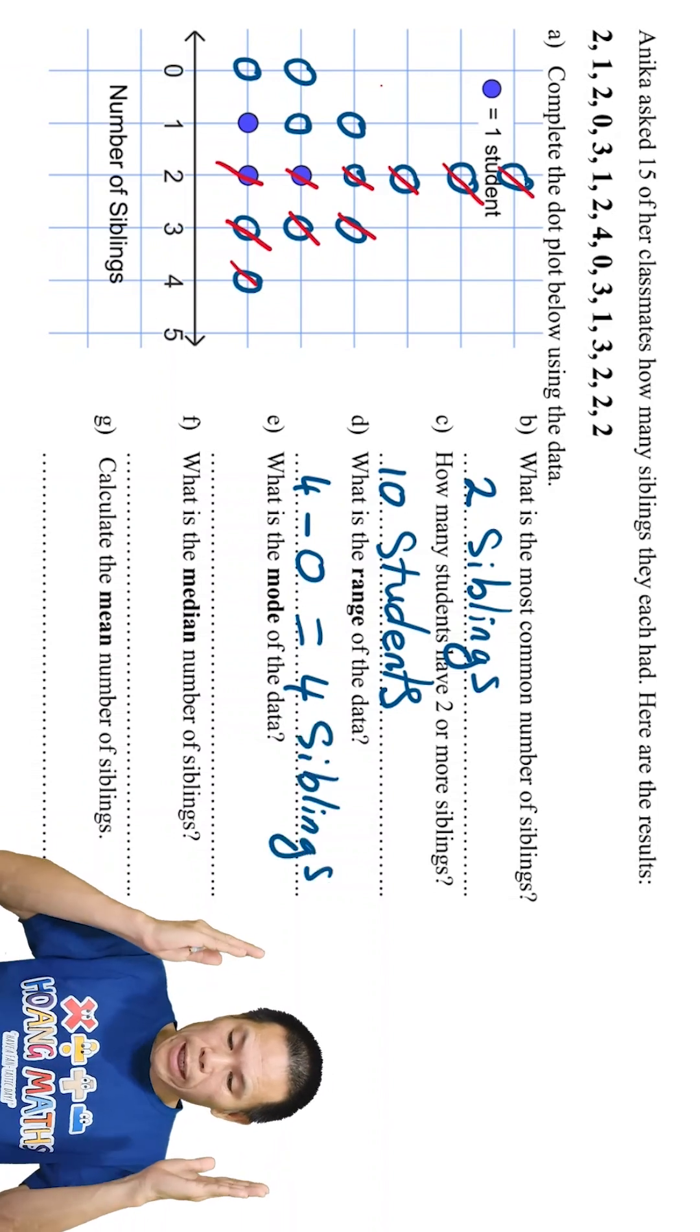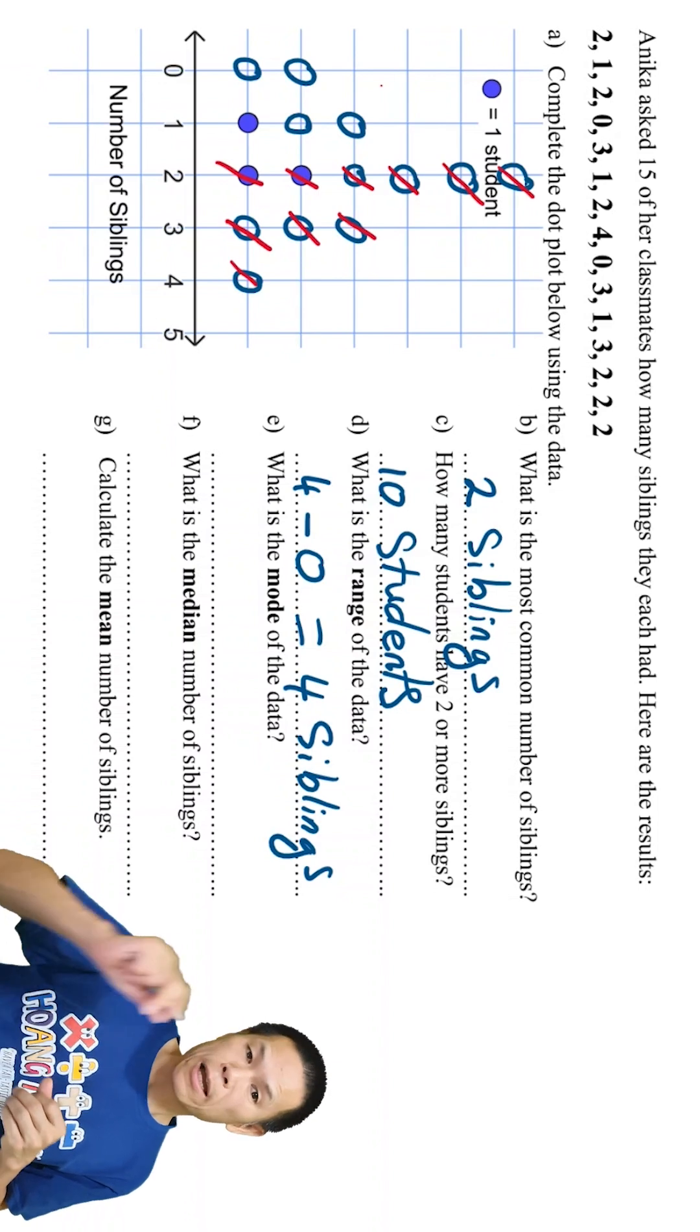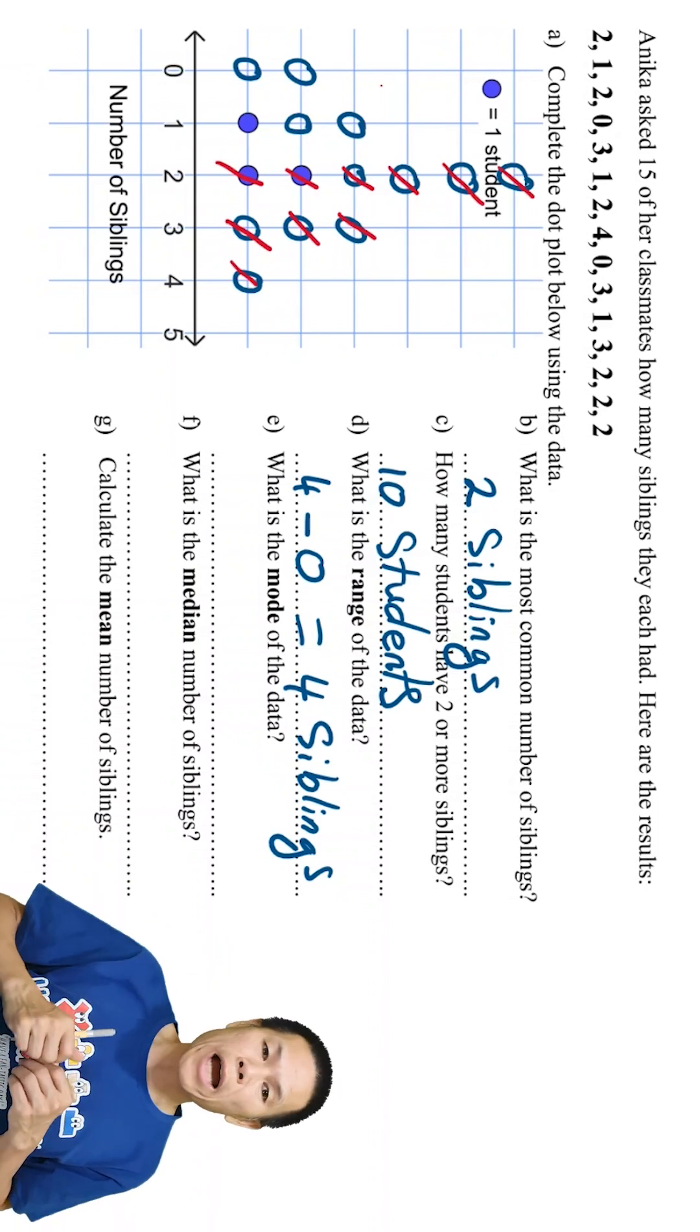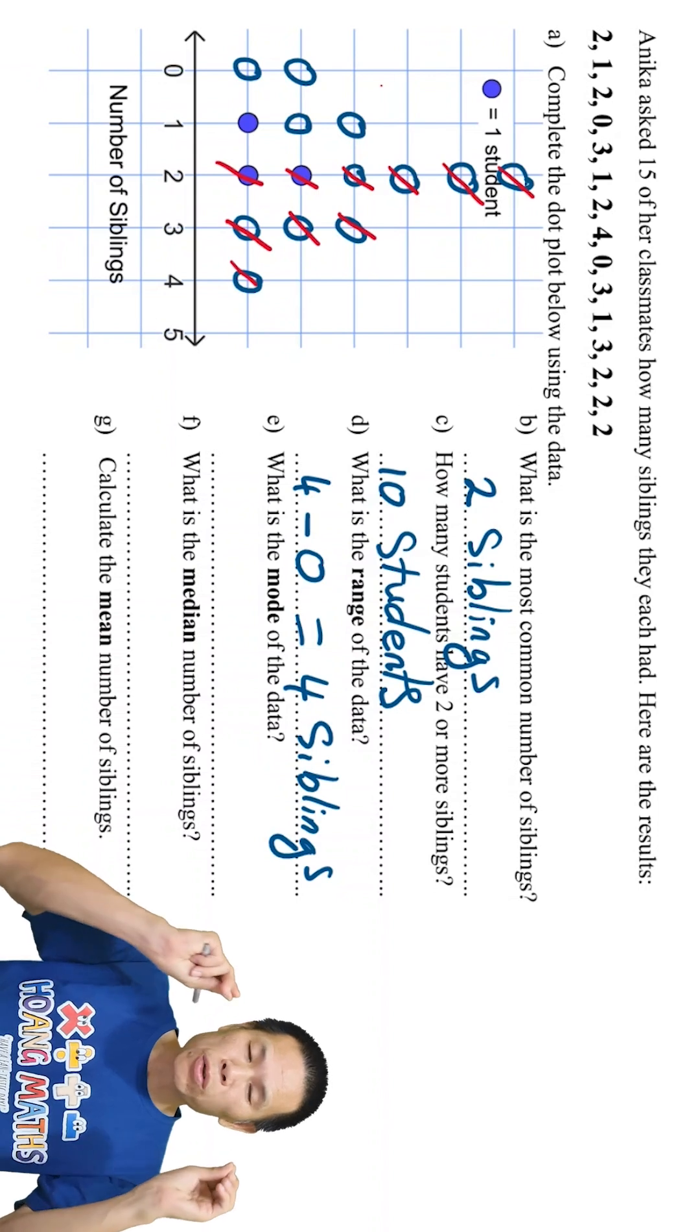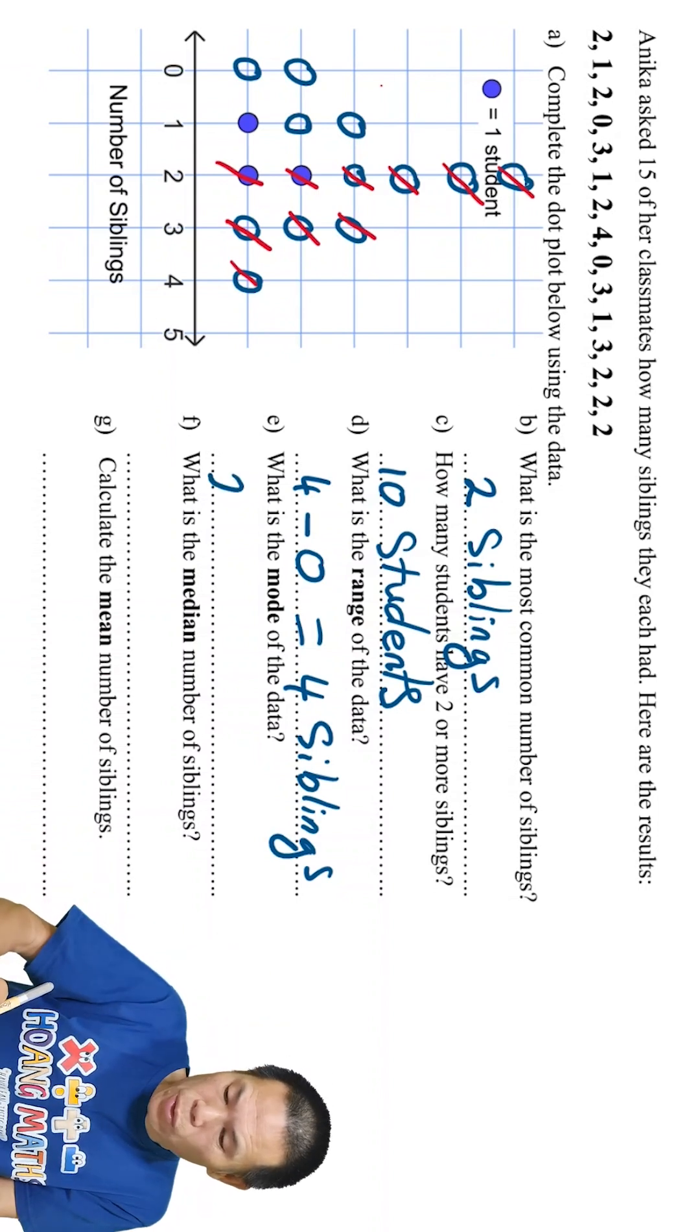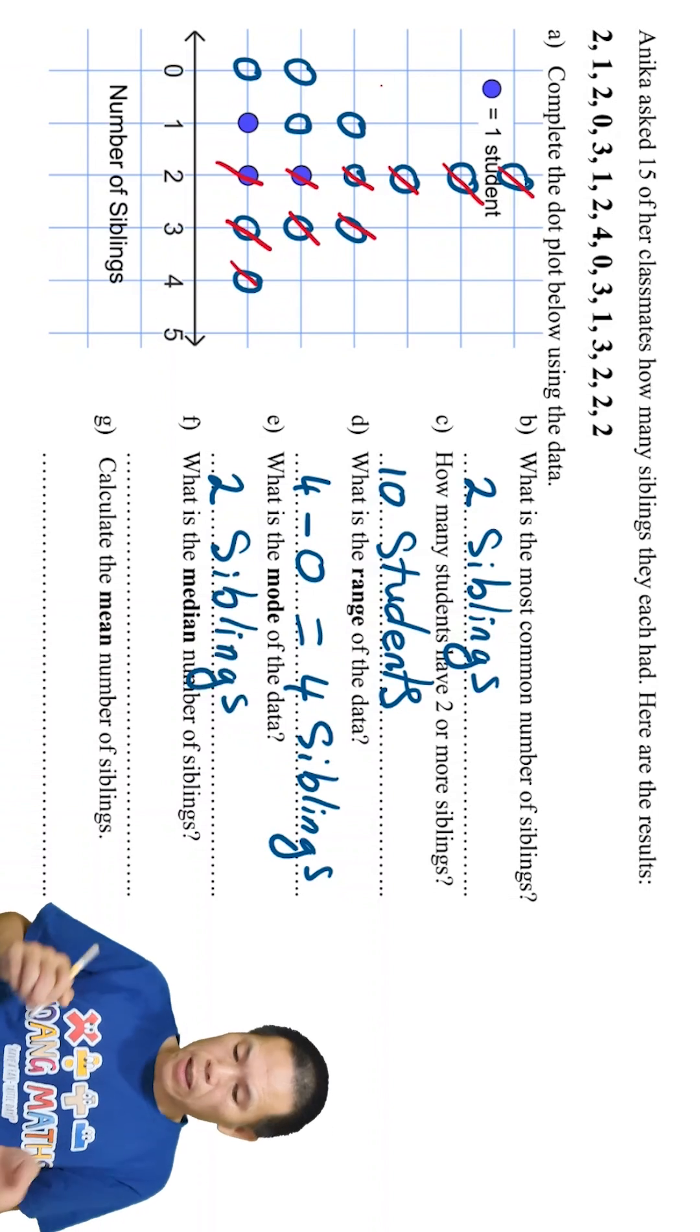Part E: what is the most common or most frequent score? So in this case here, the most frequent score is 2, so that means 2 siblings.